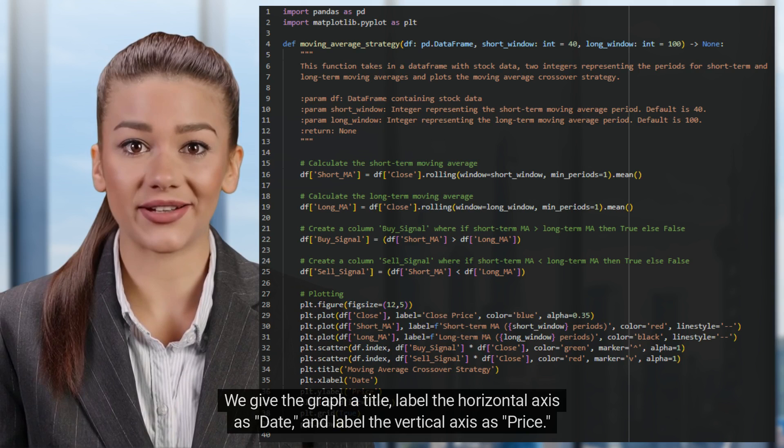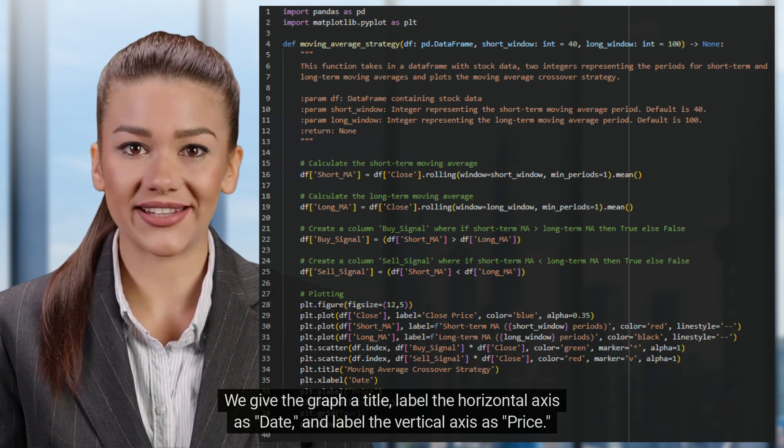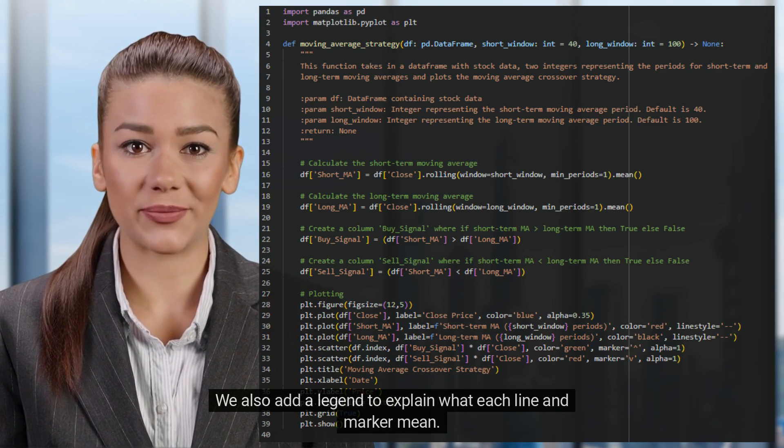We give the graph a title, label the horizontal axis as date, and label the vertical axis as price. We also add a legend to explain what each line and marker mean.